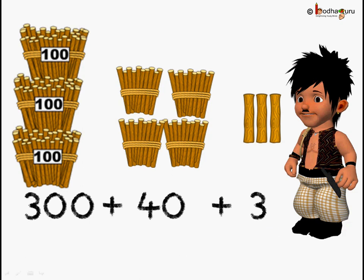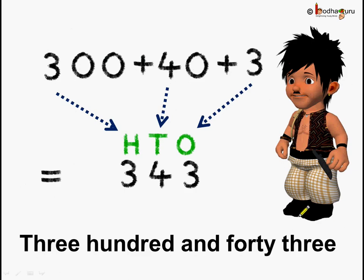Let us write it down in the standard form. So 300 plus 40 plus 3. Starting from the lowest value, how many ones are there? 3 ones are there. So 3 goes to ones place. How many tens are there? 4 tens are there. So 4 goes to the tens place. Lastly, how many hundreds are there? There are 3 hundreds. So 3 goes to the hundreds place. So what do we get? 3 hundred and forty-three. Understood?